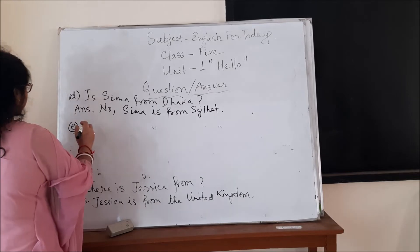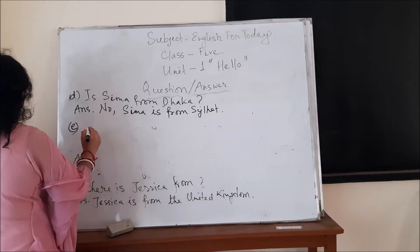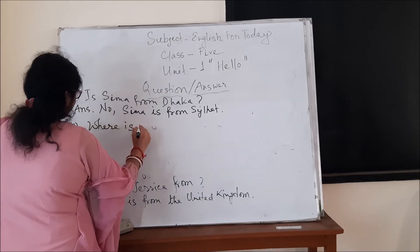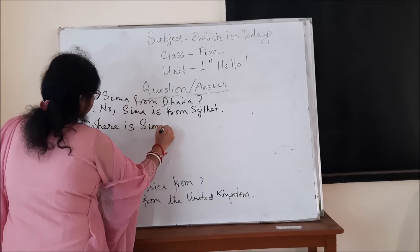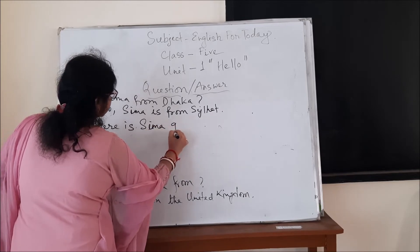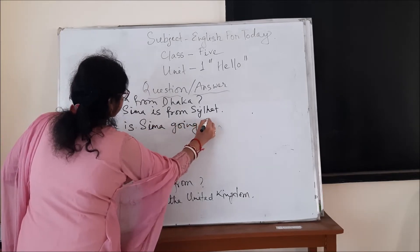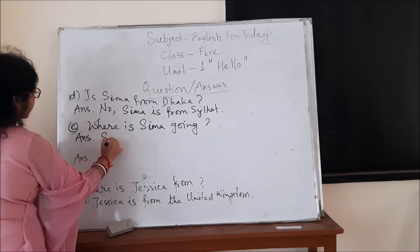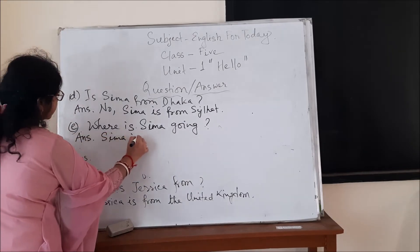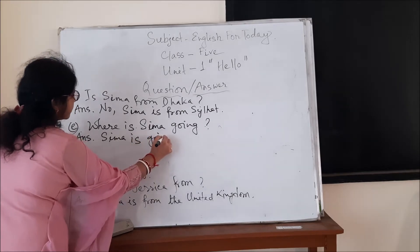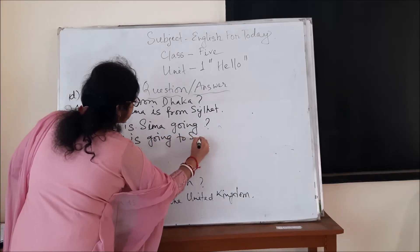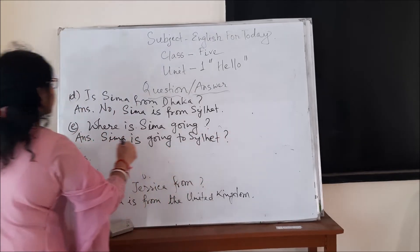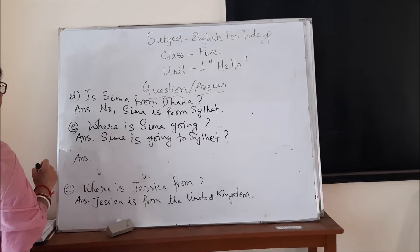Next, number E: Where is Shima going? Shima is going to Sylhet — to her own home in Sylhet.